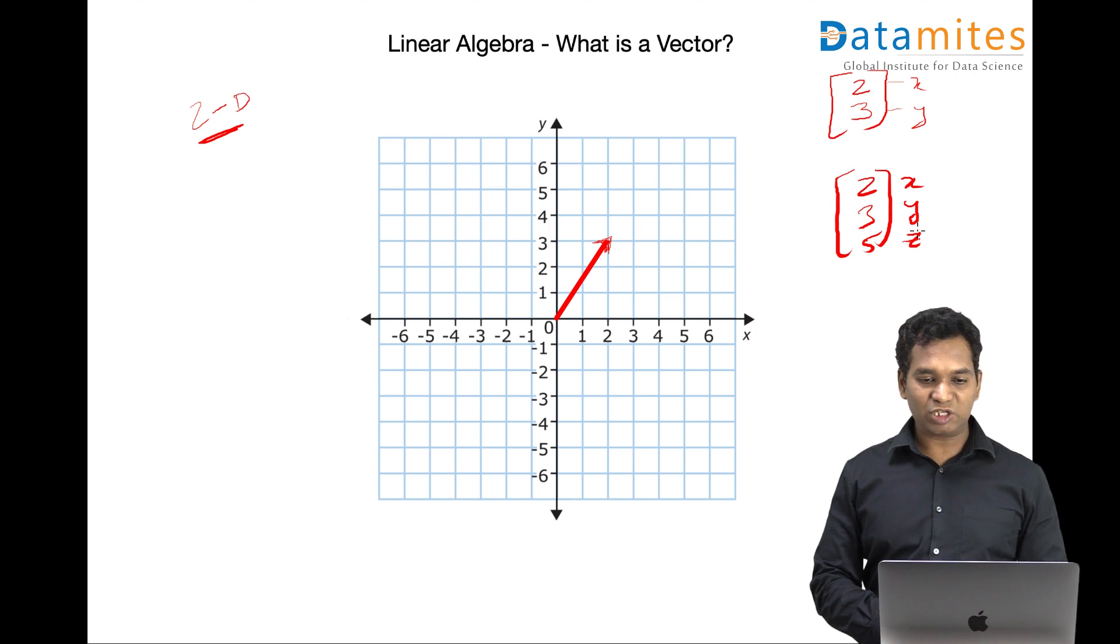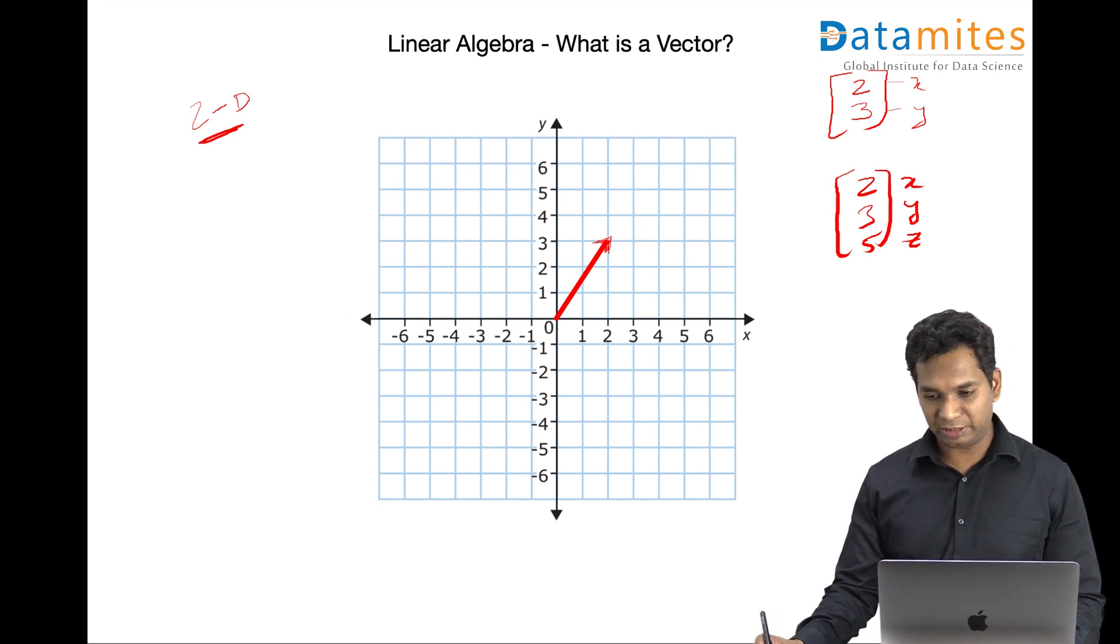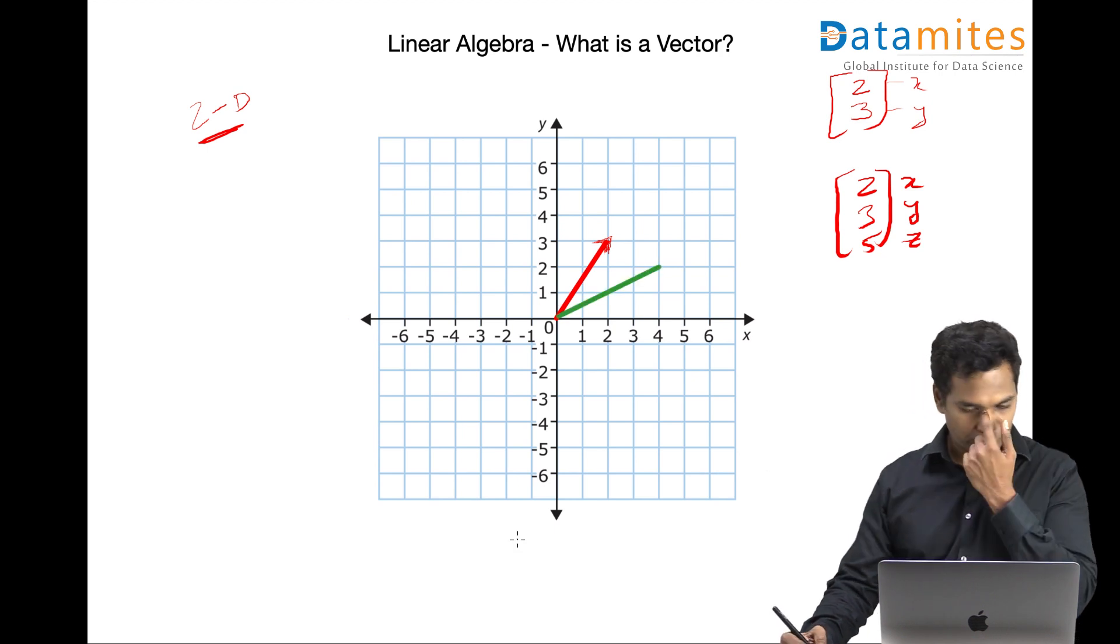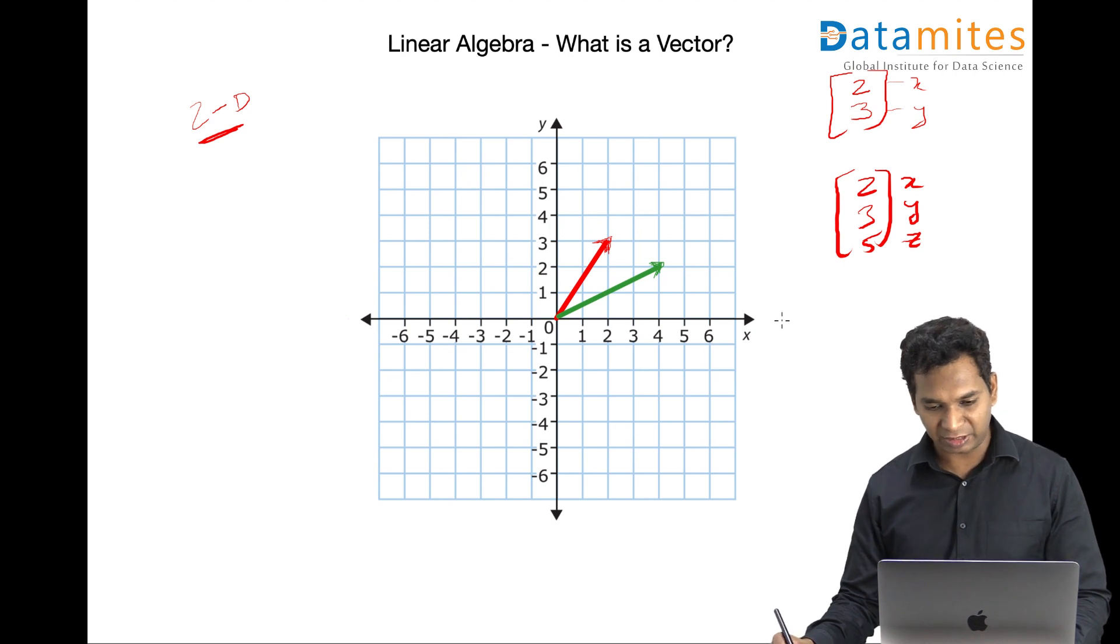And let's talk about a bit of operations, vector additions. When you try to add two different vectors. So for example, let me take another vector. Take a green one vector and let's say this is another vector. So this vector is four units on the x and two units on the y. So the green vector is four comma two.